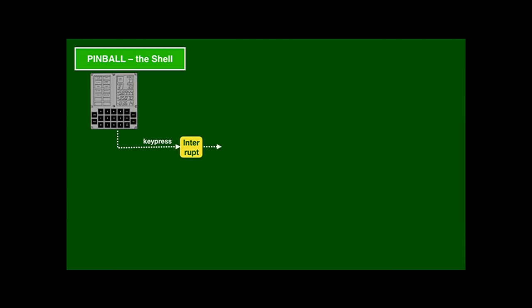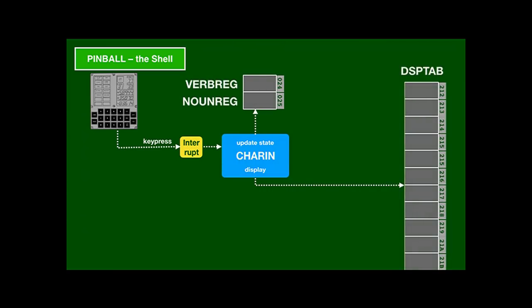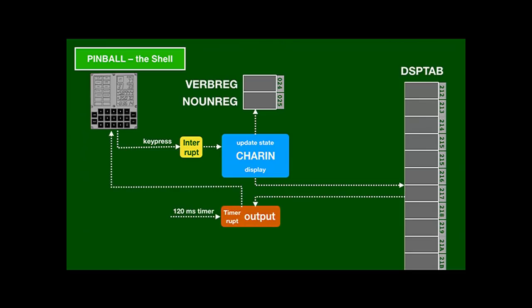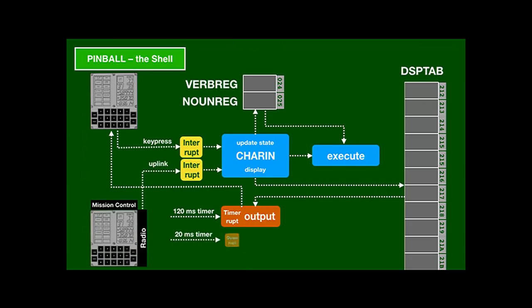The pinball program is the shell of the AGC. Keypress interrupts schedule a job that collects the digits for the command and updates an in-memory representation of what should be on the display. The 120-millisecond timer triggers the display update code. When the command is complete, pinball schedules a new job. Mission control has a remote shell in the form of a DSKY connected through the S-band radio.